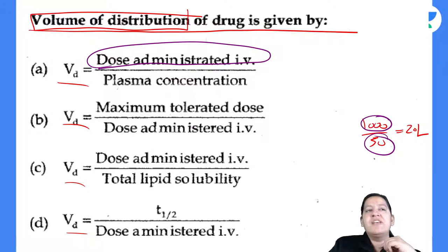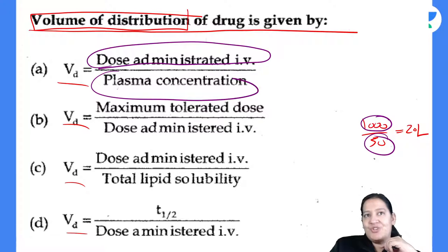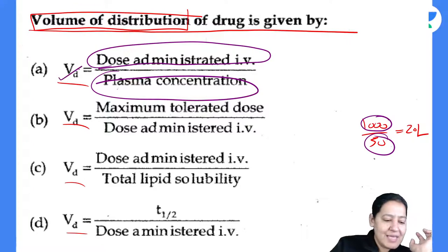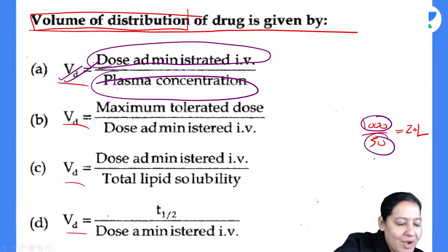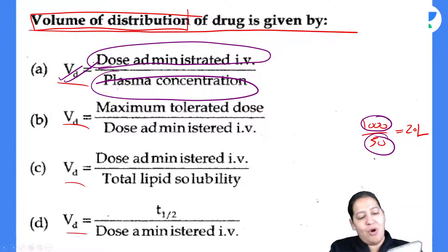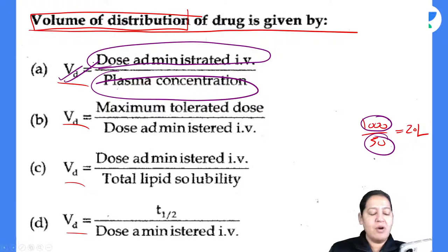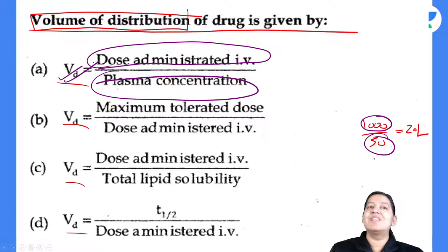Next question — a numerical. Concentration of the drug in the blood is 40 micrograms per ml (plasma concentration). Dose of the drug given IV is 200 milligrams. Calculate the volume of distribution. The formula is dose administered IV divided by plasma concentration. So it is 200 mg upon 40 micrograms/ml. The main challenge is unit conversion.